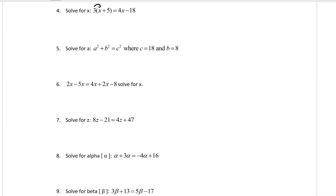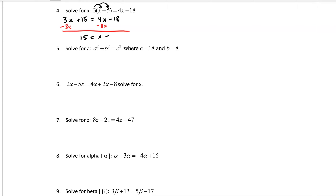In number 4, first distribute the 3 to get 3x plus 15. Since I prefer positive numbers, I subtract 3x from both sides, giving 15 equals x minus 18. Then adding 18 to both sides gives x equals 33.